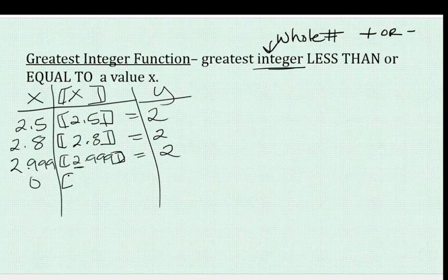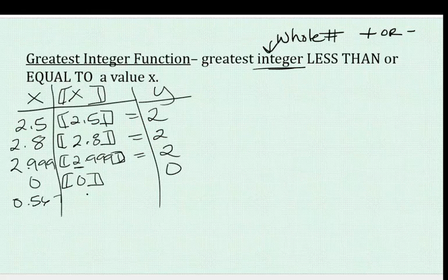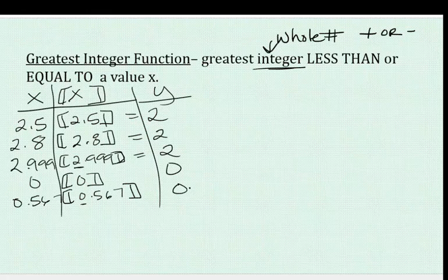What about 0? The greatest integer less than or equal to 0 is 0. What if it's 0.567? The rule says greatest integer, whole number, less than or equal to this — so less than or equal to it is still 0.